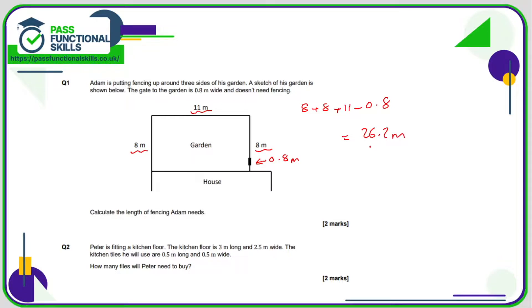Question number two: first of all, I'm going to work out the area of the floor. The floor is 3 times 2.5, which is 7.5 square meters, and the area of a tile is 0.5 times 0.5, which is 0.25 square meters. So we need to work out how many 0.25 go into 7.5. The calculation is 7.5 divided by 0.25, and that comes to 30 tiles.